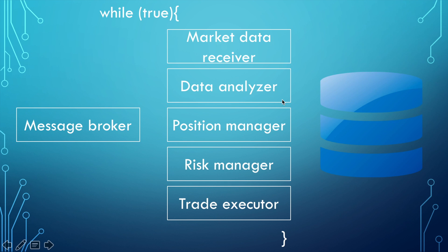Even good data analyzers are not perfect. Their accuracy may exceed 90 or 95%, but never reach 100%. That is why we have a risk manager that handles losing trades. But let's consider the following situation: the bot plans to open a long position and volatility is very high. The risk manager tells us to place a stop loss order 20% below our entry price. Should we allocate 100% of our funds to this trade? Well, certainly not.